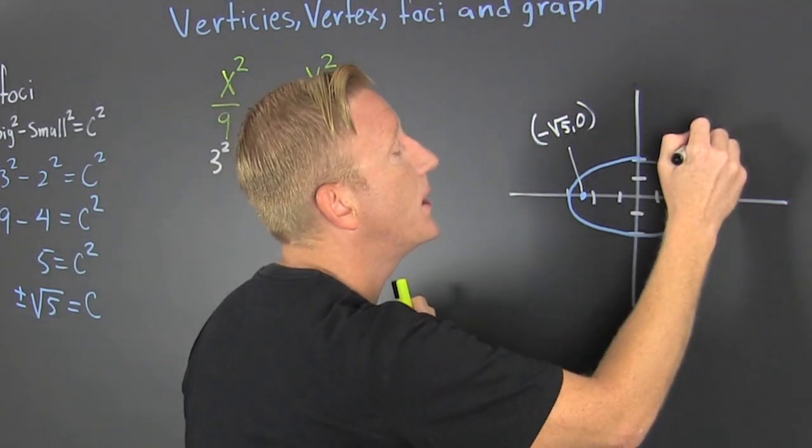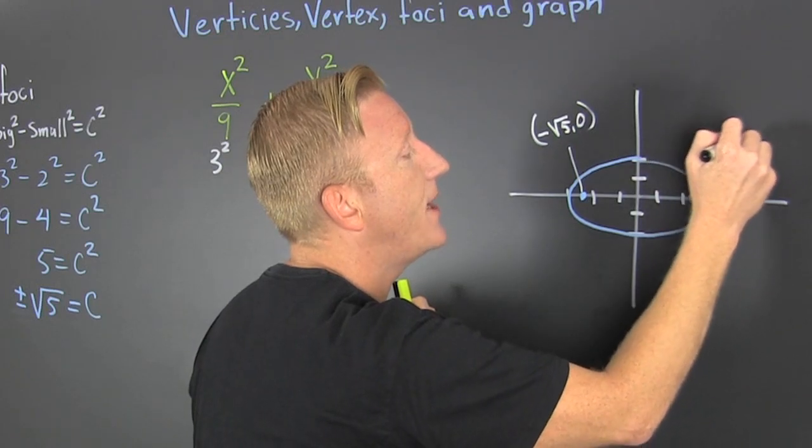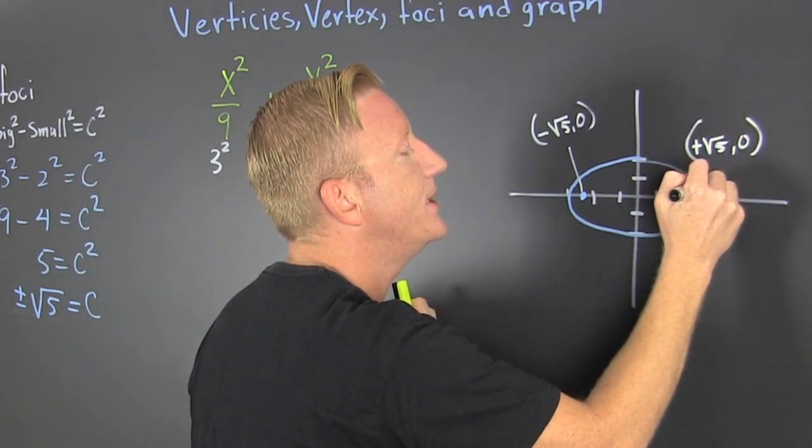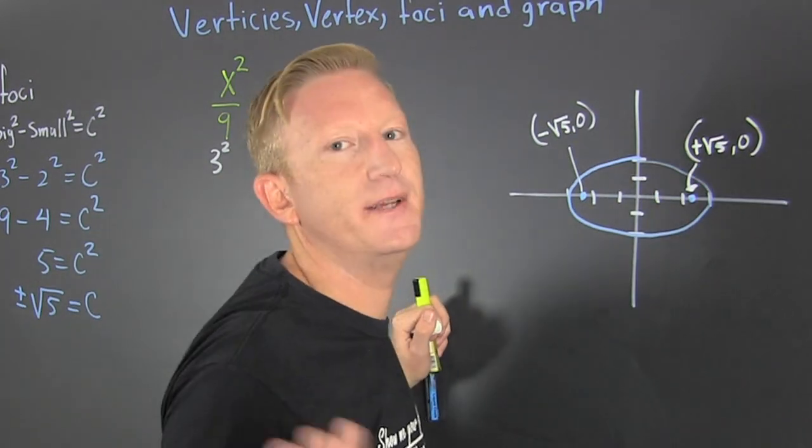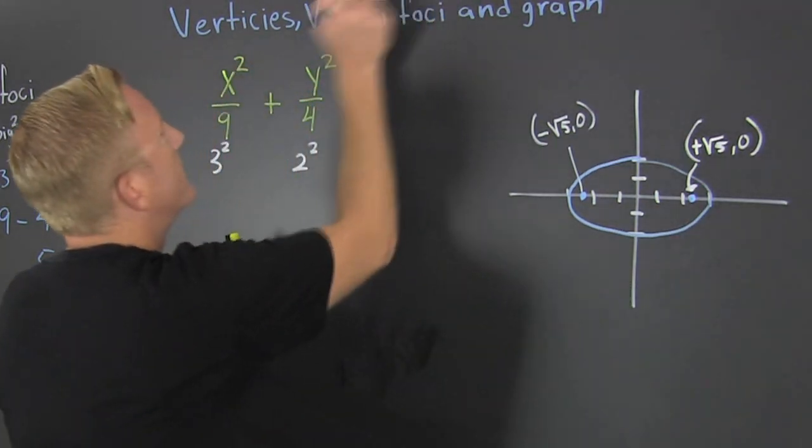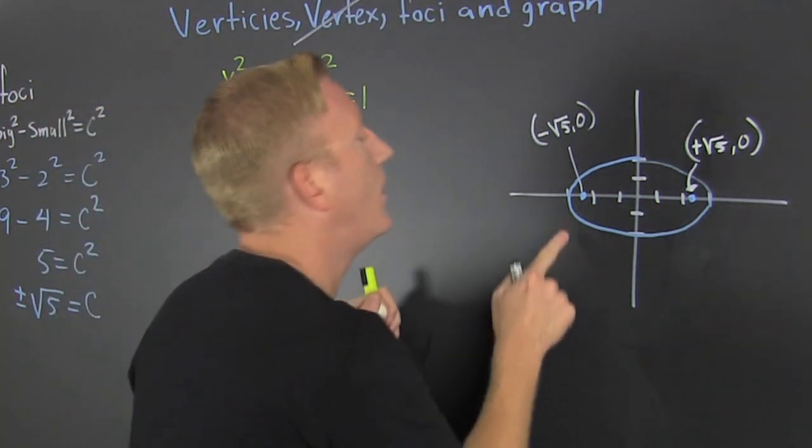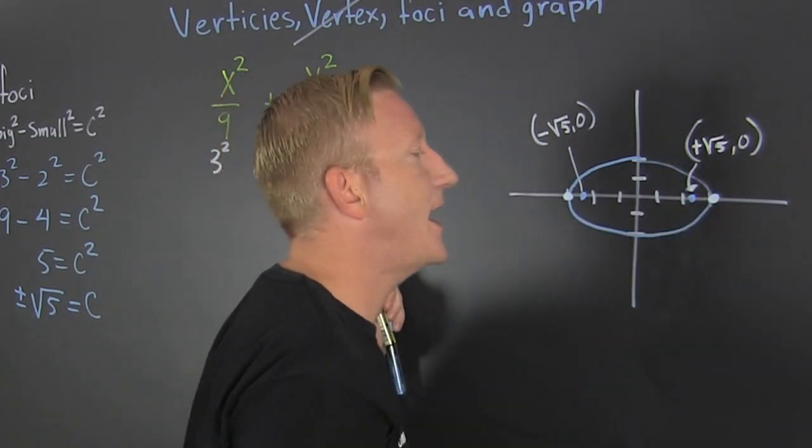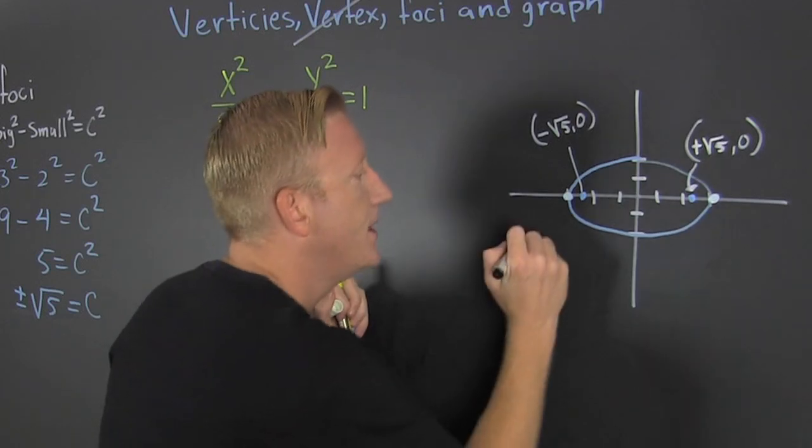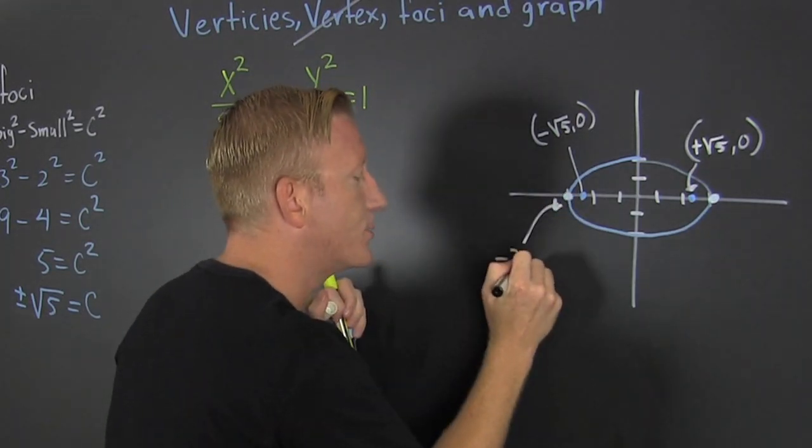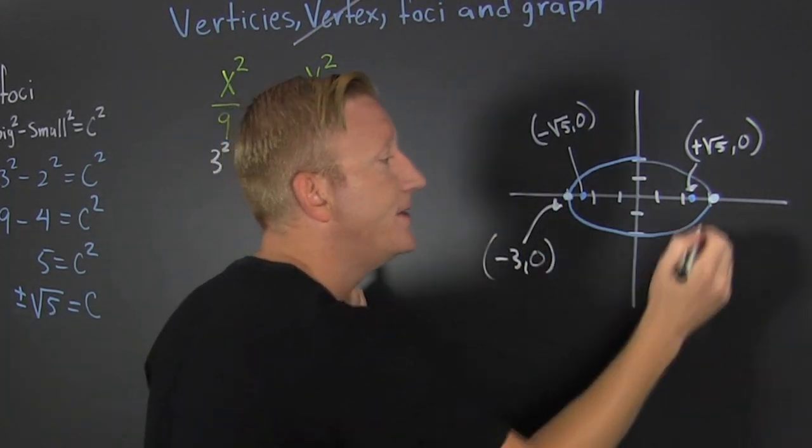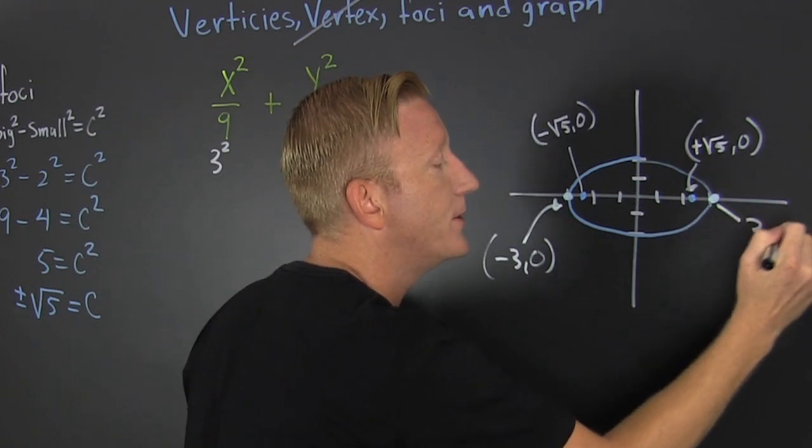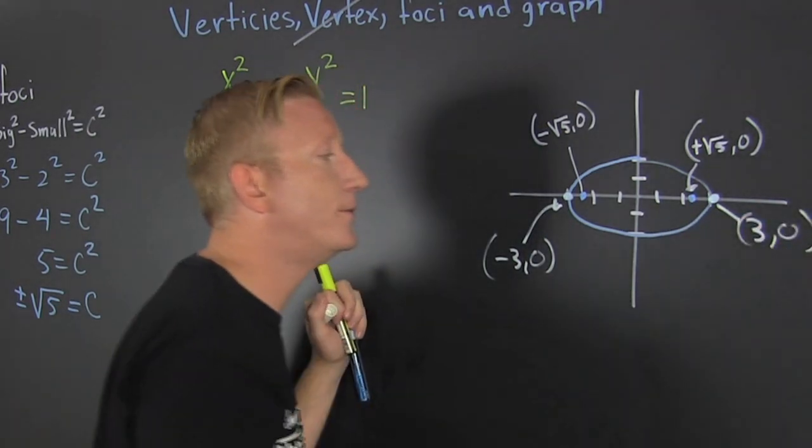Now let's go get those vertices. The vertices lie on the major axes. This is going to be minus three, zero, and then this one boom, three, zero. And then we've done just about everything we need to do.